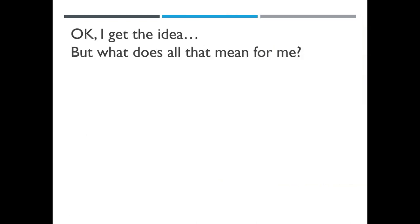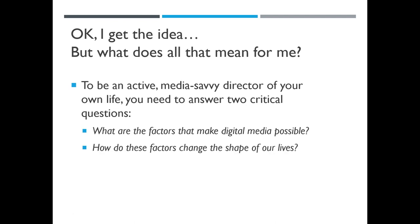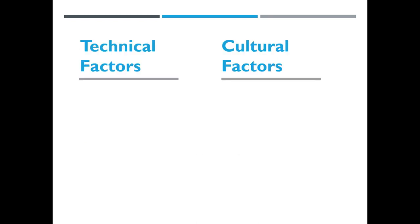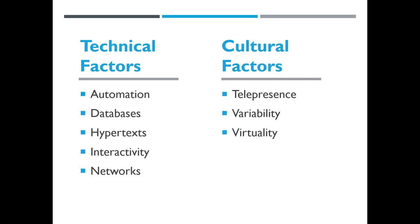So how does this tie into the class? To be an active and media-savvy director of your own life, there are two questions you need to answer: What are the factors that make digital media possible? And how do these factors change the shape of our lives? There are technical factors and cultural factors that go into making up digital media. The technical factors are automation, databases, hypertexts, interactivity, and networks. The cultural factors are telepresence, variability, and virtuality.